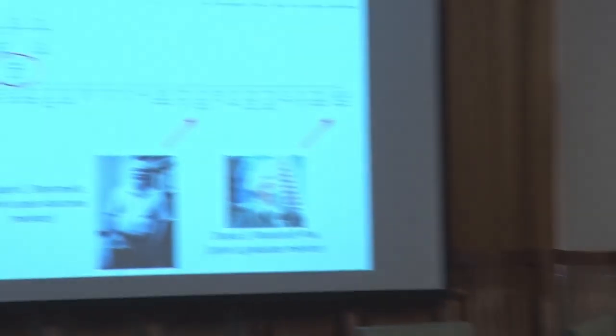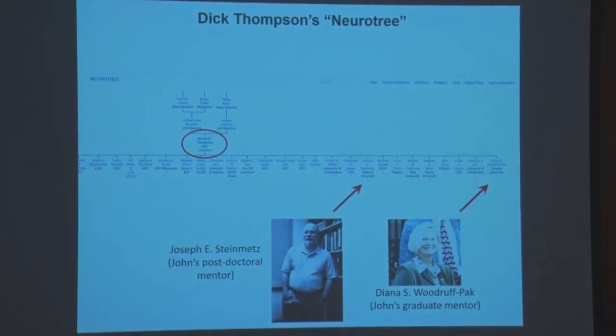Thompson wrote in 1976 that they had recently adopted classical conditioning of the eyeblink response of the intact learning rabbit as a model system for analysis of brain substrates of associative learning. Dick Thompson had an absolutely extraordinary career — one of the giants in the field of learning and memory and neurobiology of learning and memory.